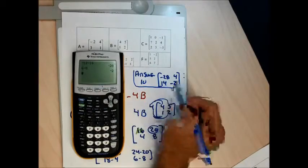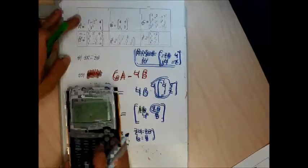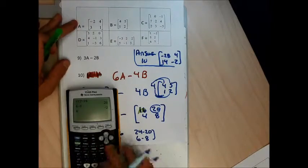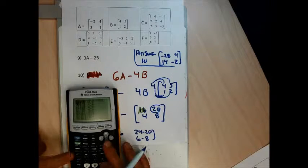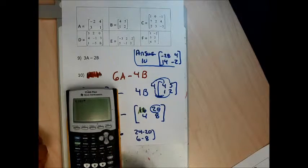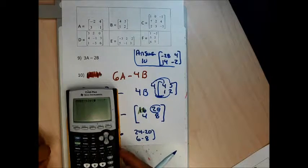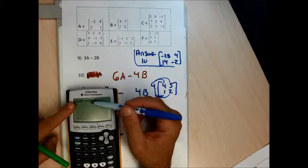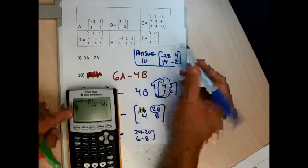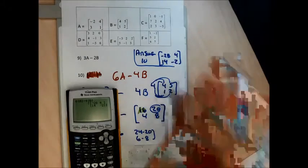Let me check it. My calculator is lovely for this checking. I type 6, then second matrix — hit enter on A — then minus 4, second, the X-inverse matrix key, go down to B, hit enter. That's 6 times matrix A minus 4 times matrix B. Hit enter — I see negative 28, 4, 14, negative 2. Perfect.